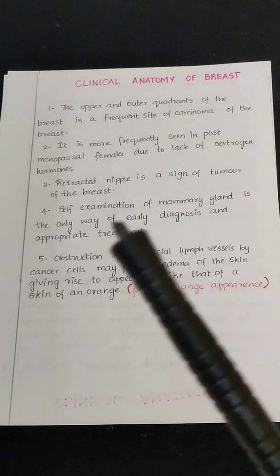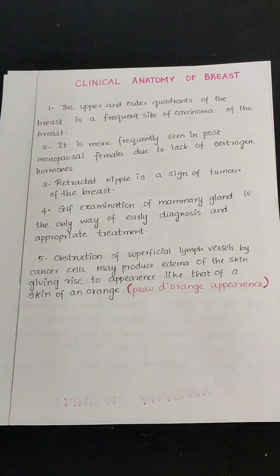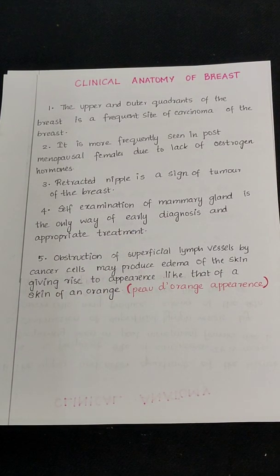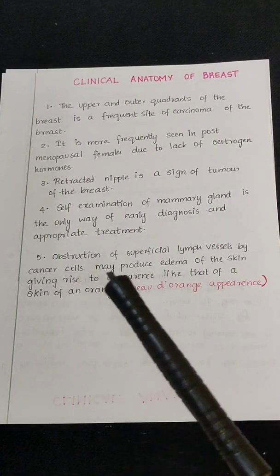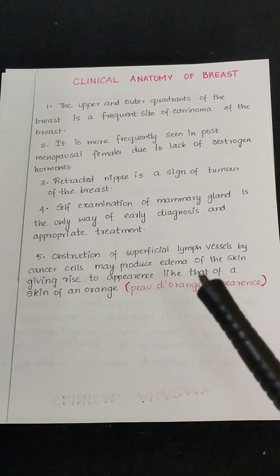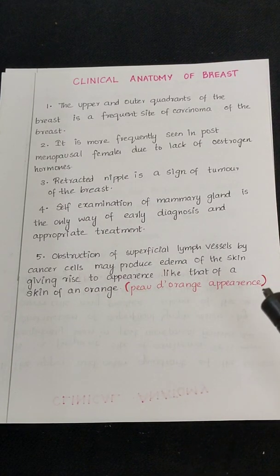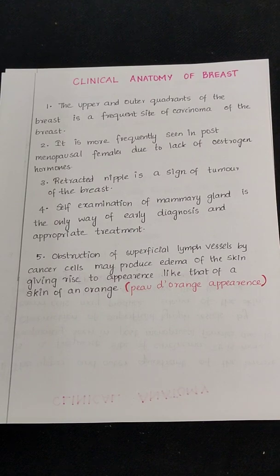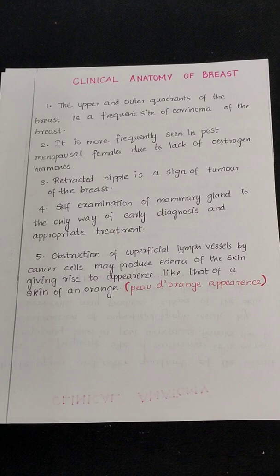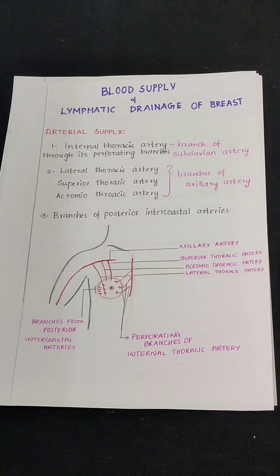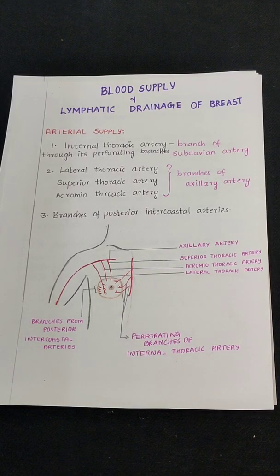Self-examination of the mammary gland is the only way of early diagnosis and appropriate treatment for carcinoma of the breast. Obstruction of superficial lymphatics by cancer cells may produce edema of the skin, giving rise to an appearance like that of the skin of an orange — this is called the peau d'orange appearance. With that, we have completed this important topic on the breast or mammary gland.